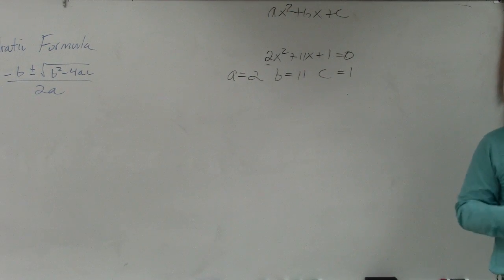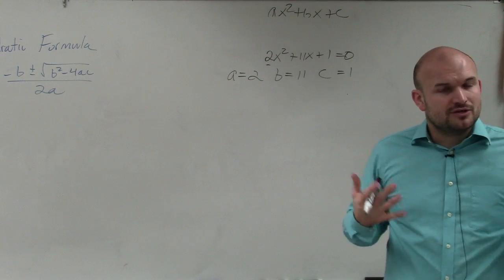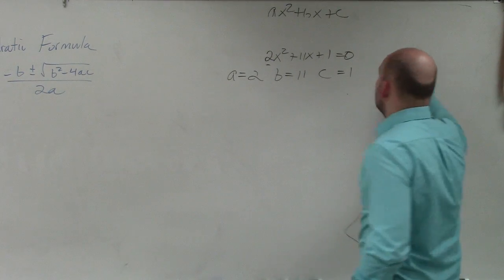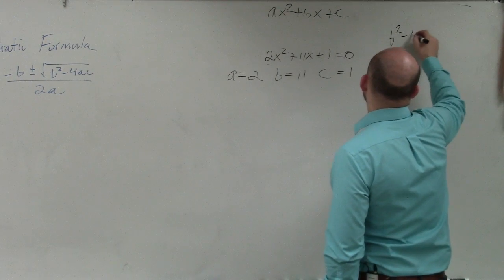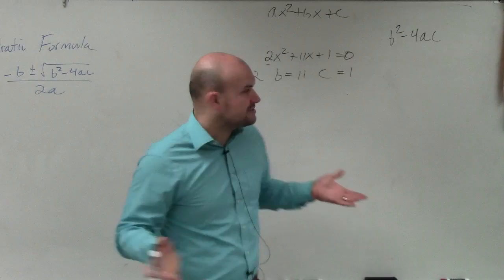Then the next thing that we did was we talked about identifying the discriminant. Now, you're not going to have to classify using the discriminant, but I would still recommend finding the discriminant first. So the discriminant was B squared minus 4 times A times C, and all we did was plug in those values to find the discriminant.